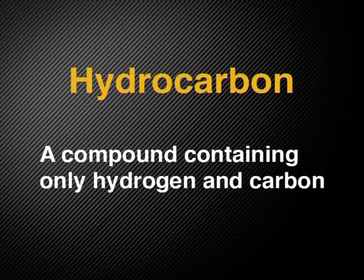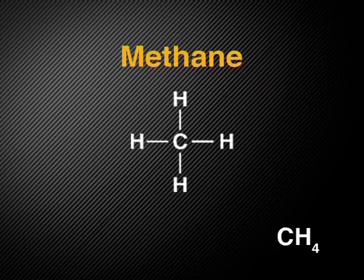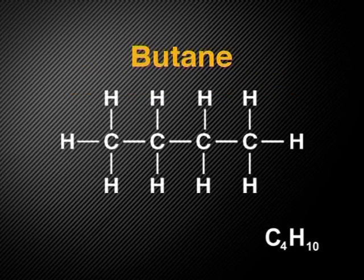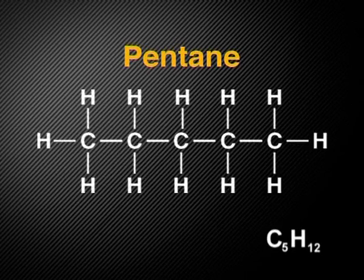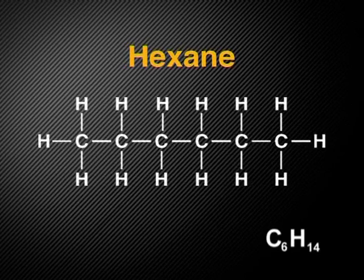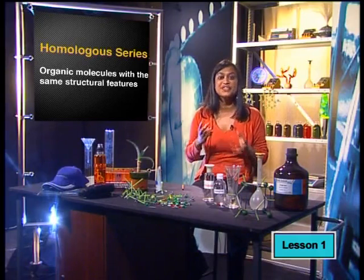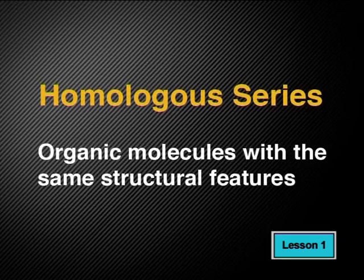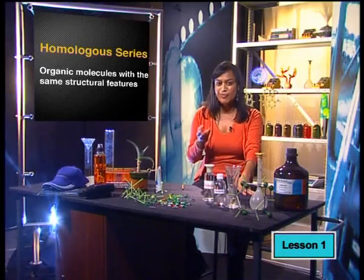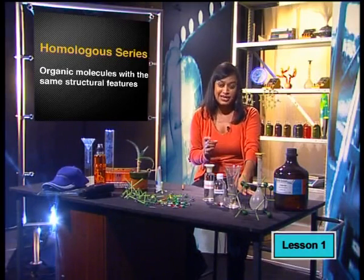Let's take a closer look at some of the more common groups or types of organic molecules that make up the backbone for more complex molecules. The first group we will look at are simple hydrocarbons. A hydrocarbon is a compound based on hydrogen and carbon. All molecules in this family are made up of chains of carbon. Each of these chains of carbon contains only single bonds between the carbon atoms. Organic molecules with the same structural features are called a homologous series. The homologous series with only single bonds between carbon atoms is called alkanes.